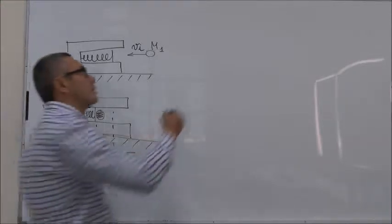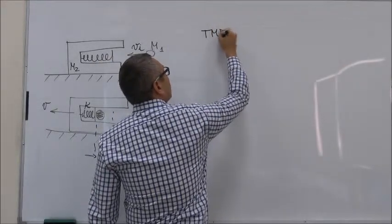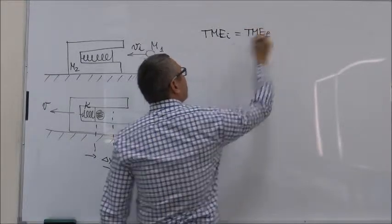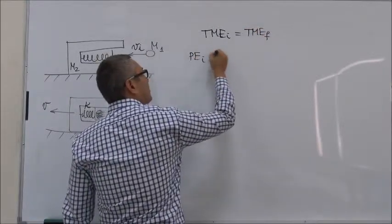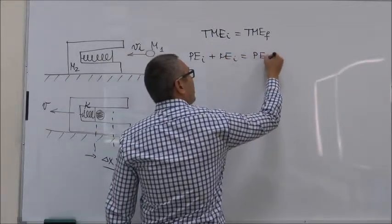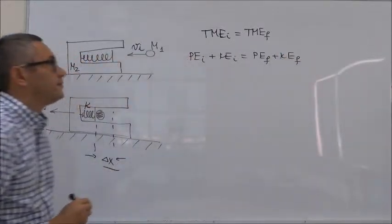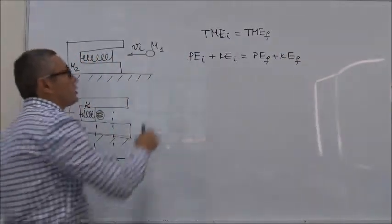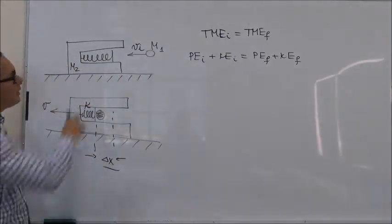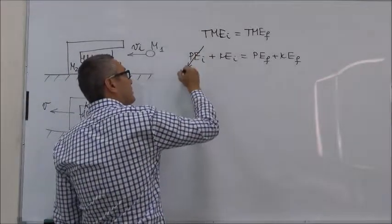So we can say that total mechanical energy initial is equal to the total mechanical energy final. Or, potential energy initial plus kinetic energy initial equals potential energy final plus kinetic energy final. Potential energy initial is equal to zero because at the initial state the spring is neither compressed nor stretched.